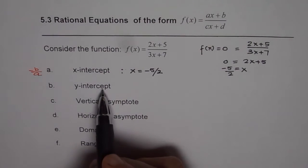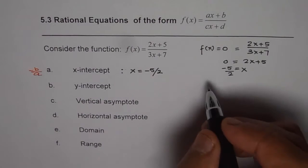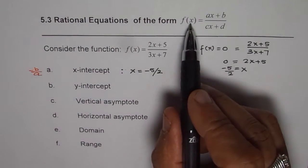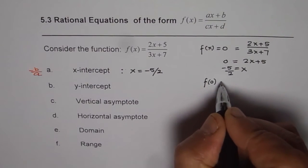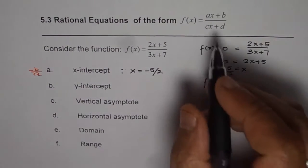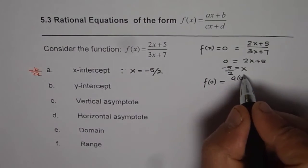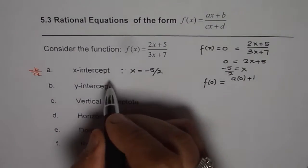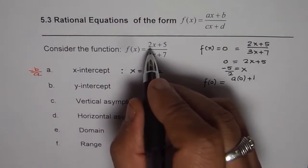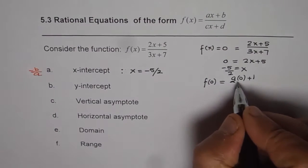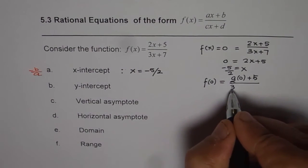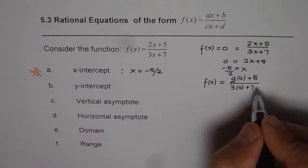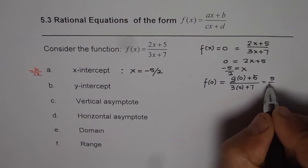Now let us find the y-intercept. Y-intercept is the point where the x value is 0. So we will replace x with 0. That means f of 0 is y-intercept. So what we get is 2 times 0 plus 5 divided by 3 times 0 plus 7. So we get 5 over 7.